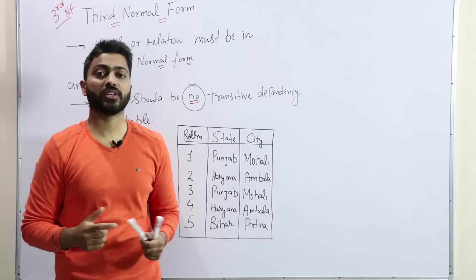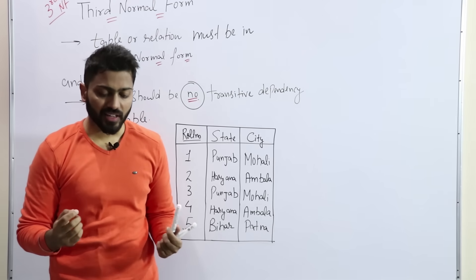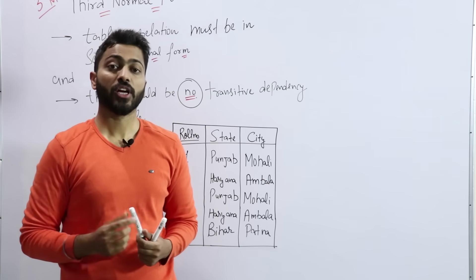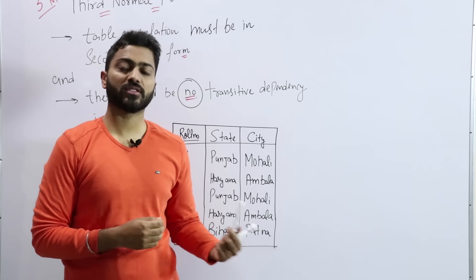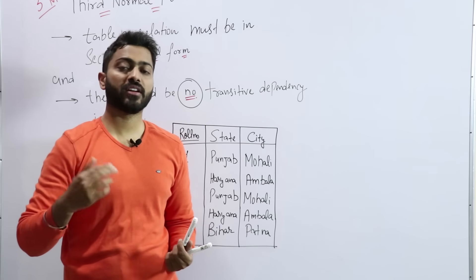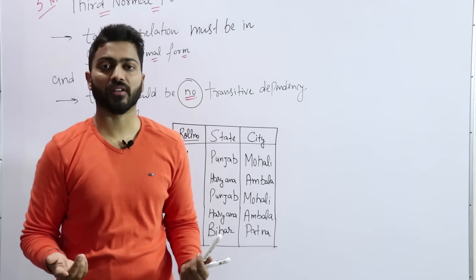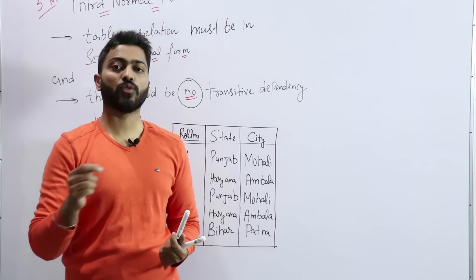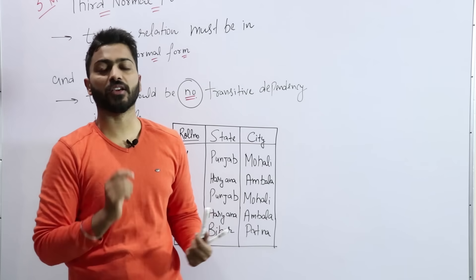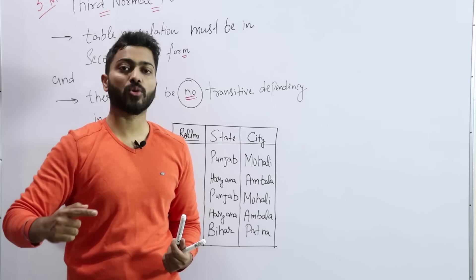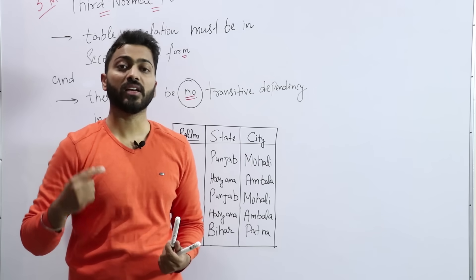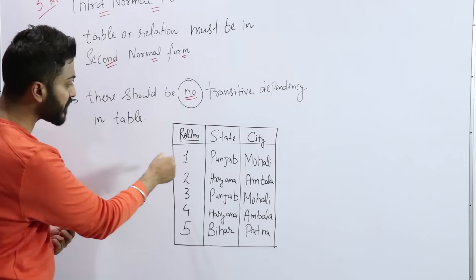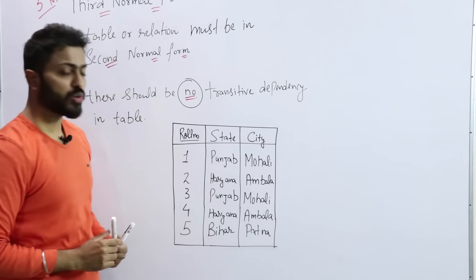Transitive dependency is like if you have a table with a non-prime attribute. Non-prime attributes are those candidate key attributes that don't participate as candidate keys. So, if there is no non-prime attribute determining another, it will be a prime attribute or candidate key. We will examine this with a student table example.